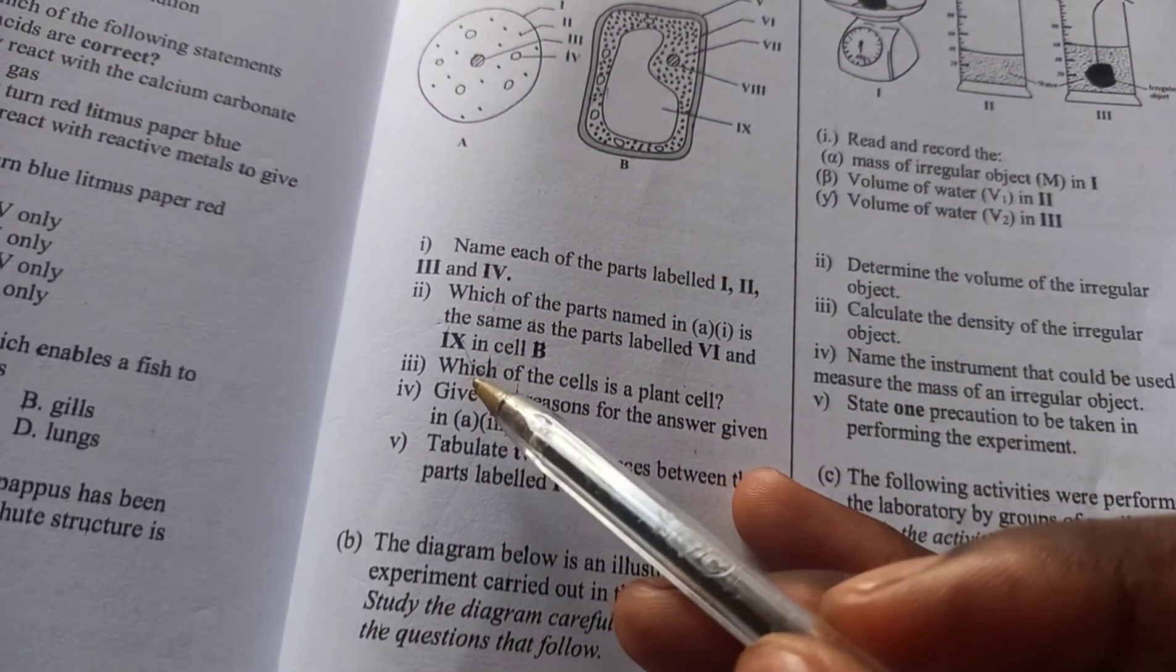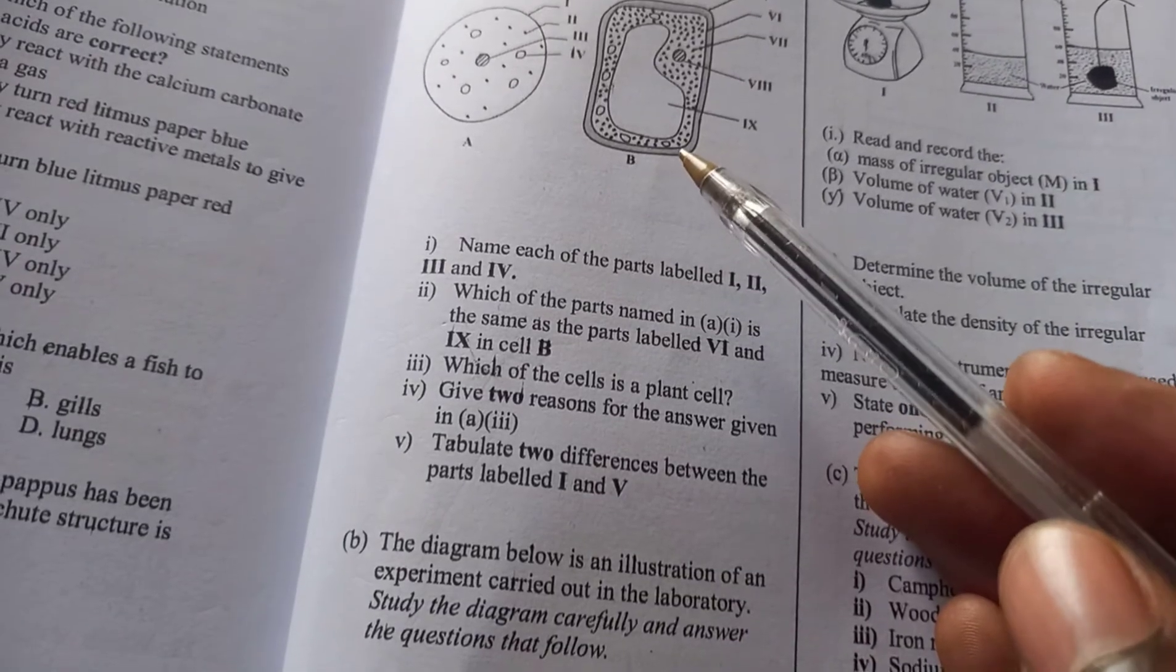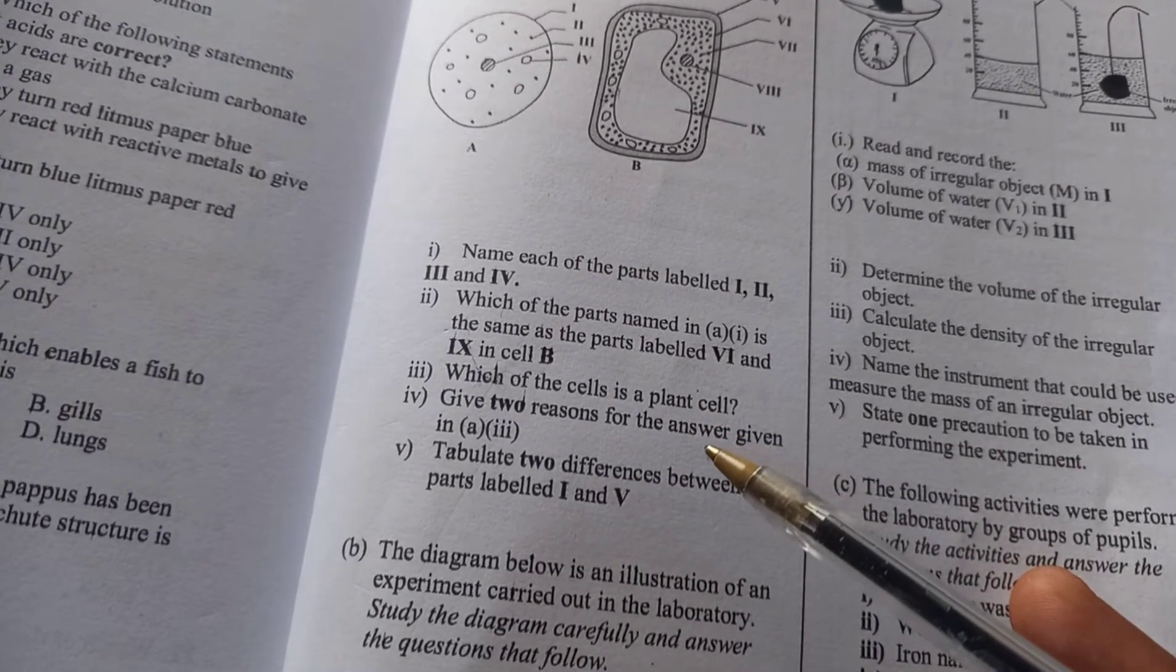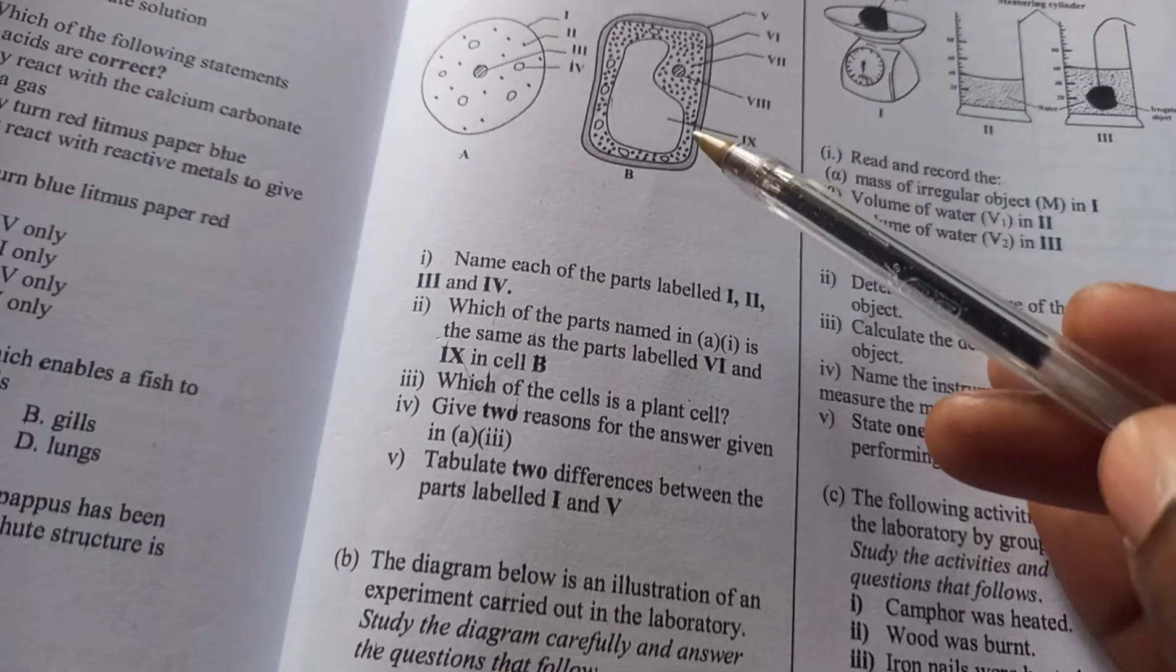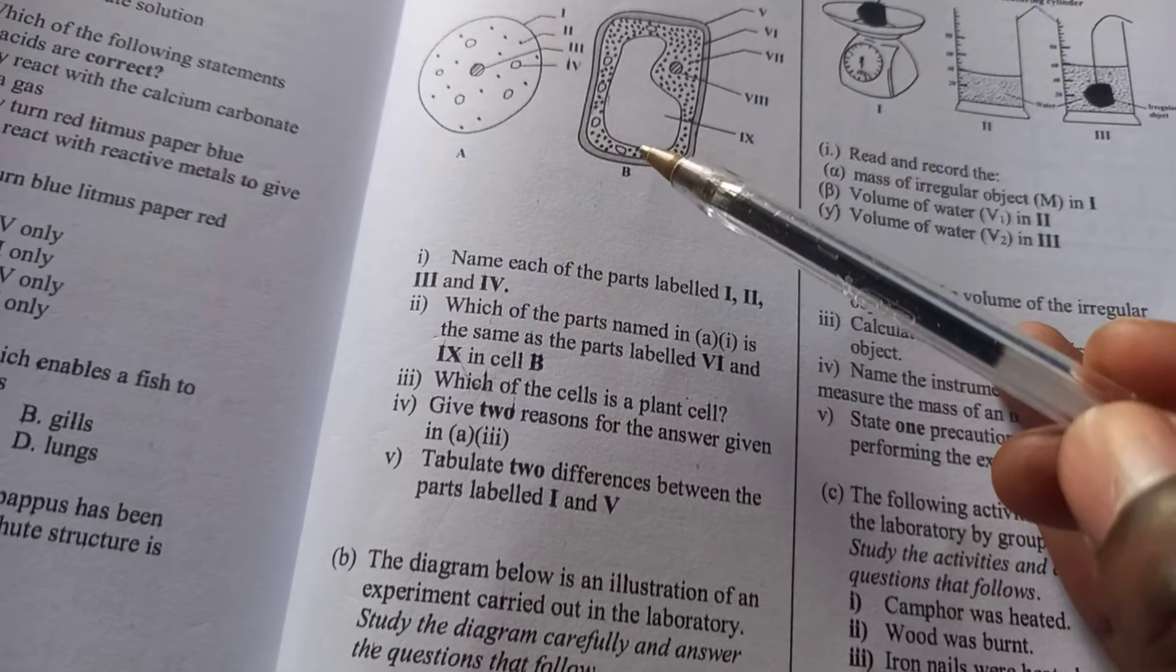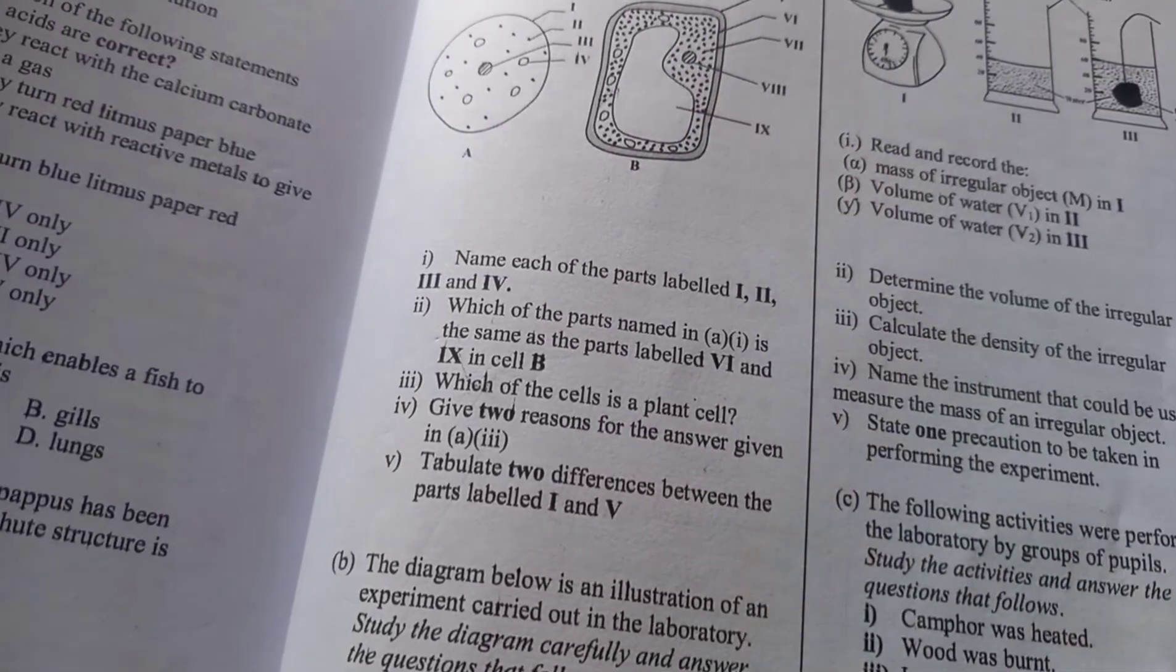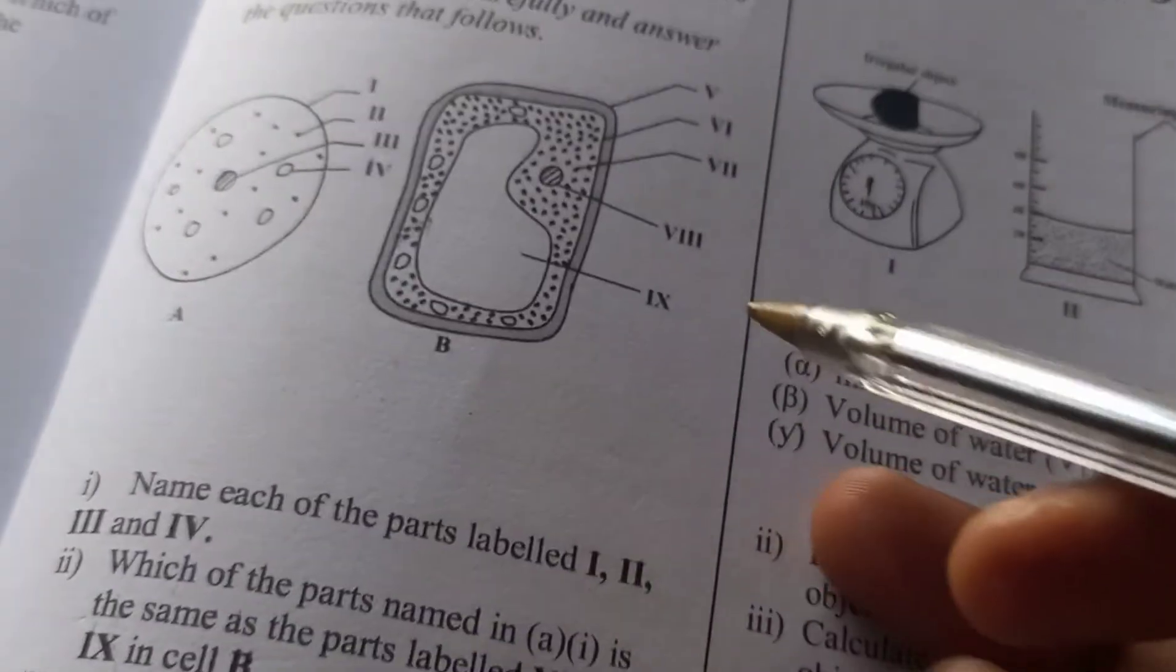Then we'll come to 1a(iii), which is which of the cells is a plant cell? That's cell B. And then the follow-up question is give two reasons for your answer. Okay, so one thing we can see is that the cell has a cell wall and the other cell doesn't have a cell wall, so this makes it a plant cell. And also there's the presence of a large vacuole, which is an indication of a plant cell.